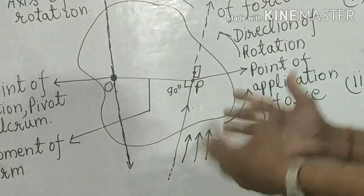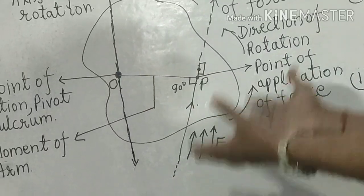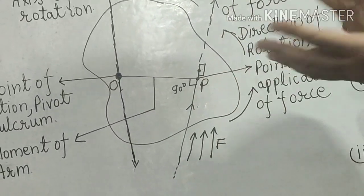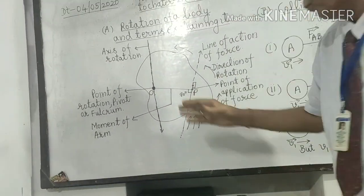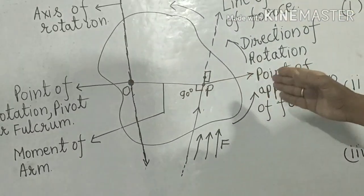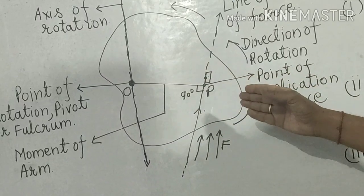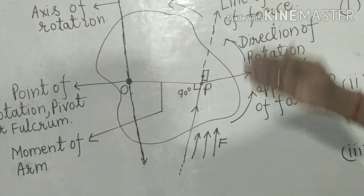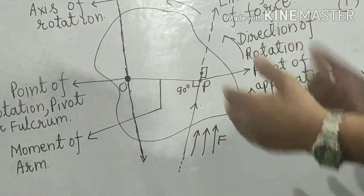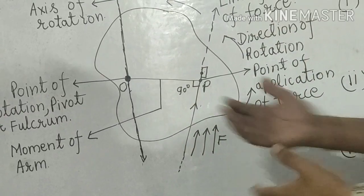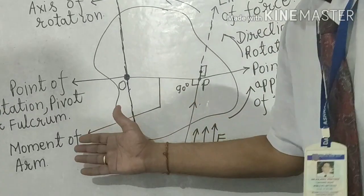And if the force is more, the rotation depends on two factors: the moment arm — meaning this distance — which is directly proportional. If the moment arm is more, the rotation is more, as well as the force.